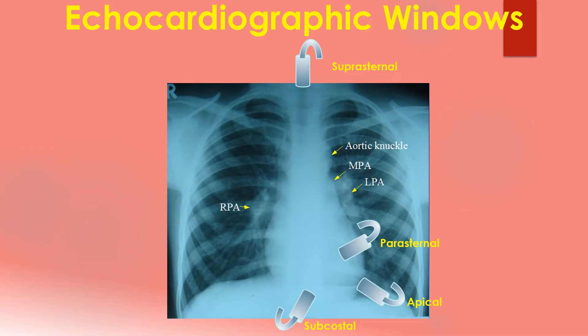The four common locations at which the echocardiographic transducer is placed for imaging are the parasternal, apical, subcostal and suprasternal. Parasternal views are often obtained first, followed by apical, subcostal and suprasternal. A good knowledge of the anatomy of the heart is needed for interpretation of images from each view. This becomes more difficult in complex congenital heart diseases where cardiac chamber positions and size may vary.